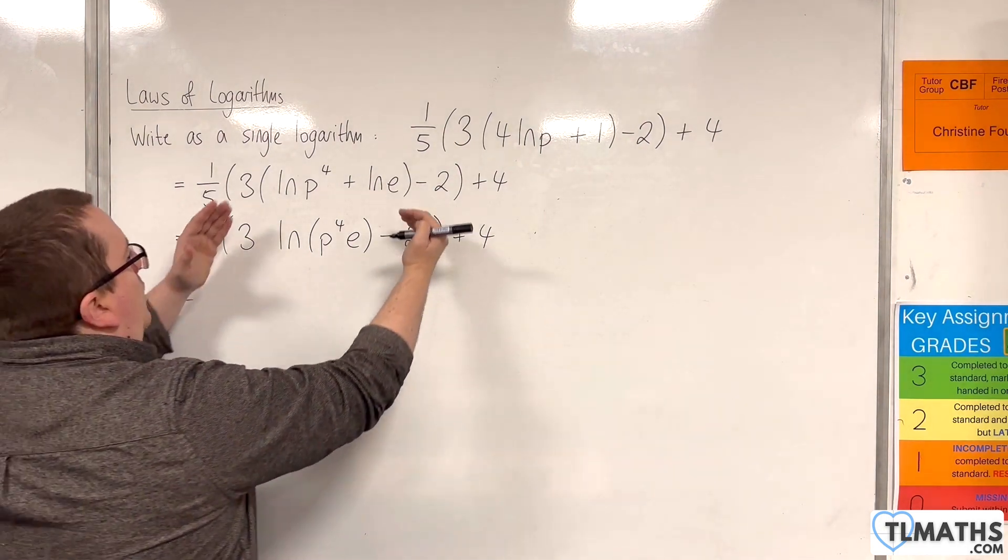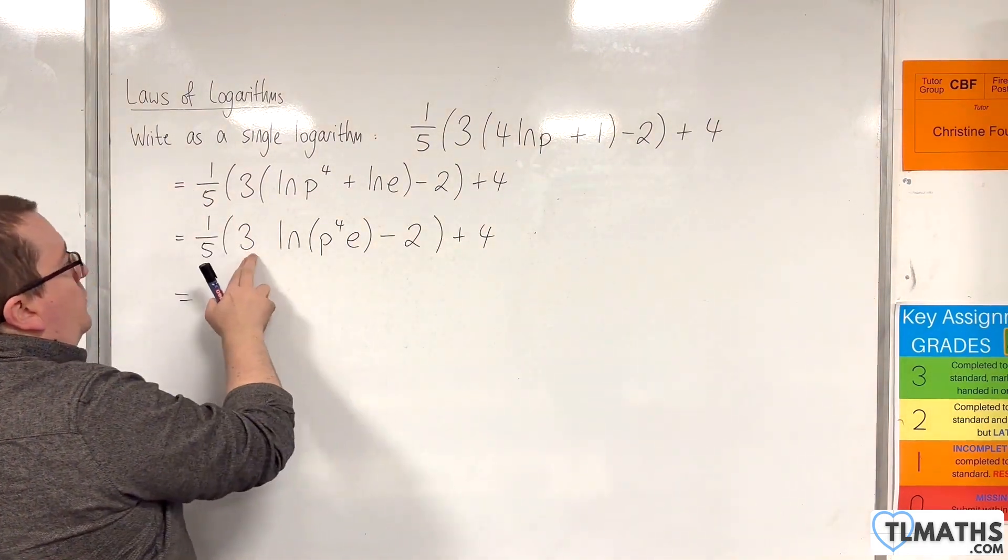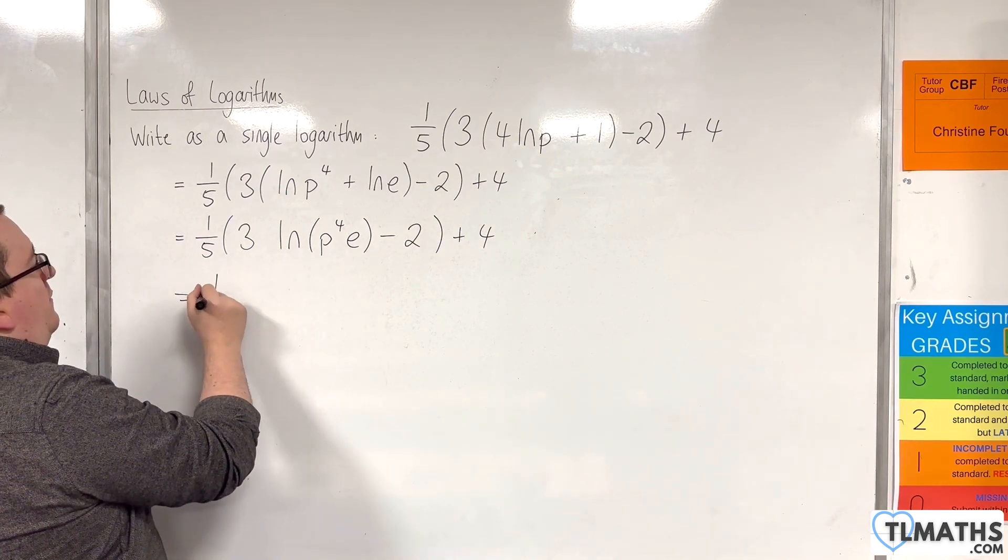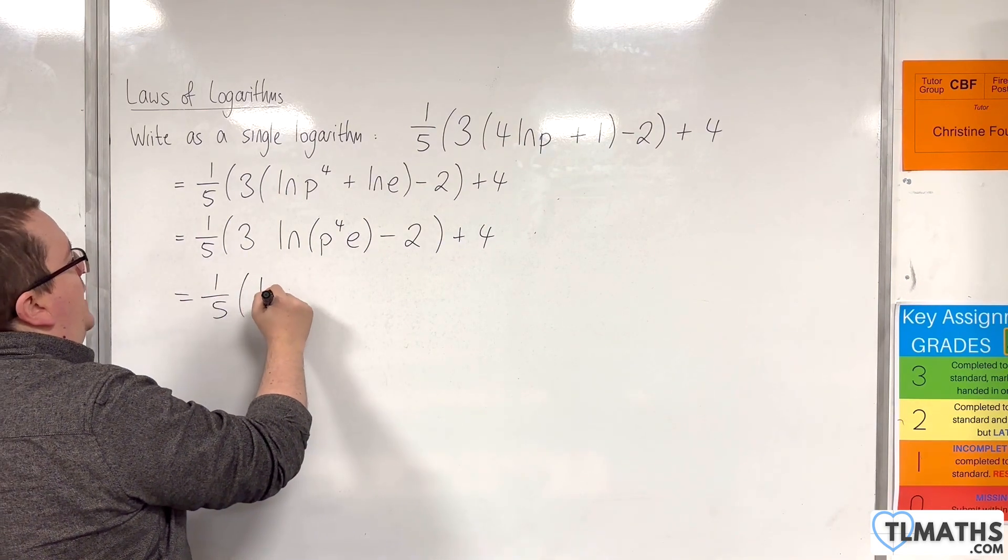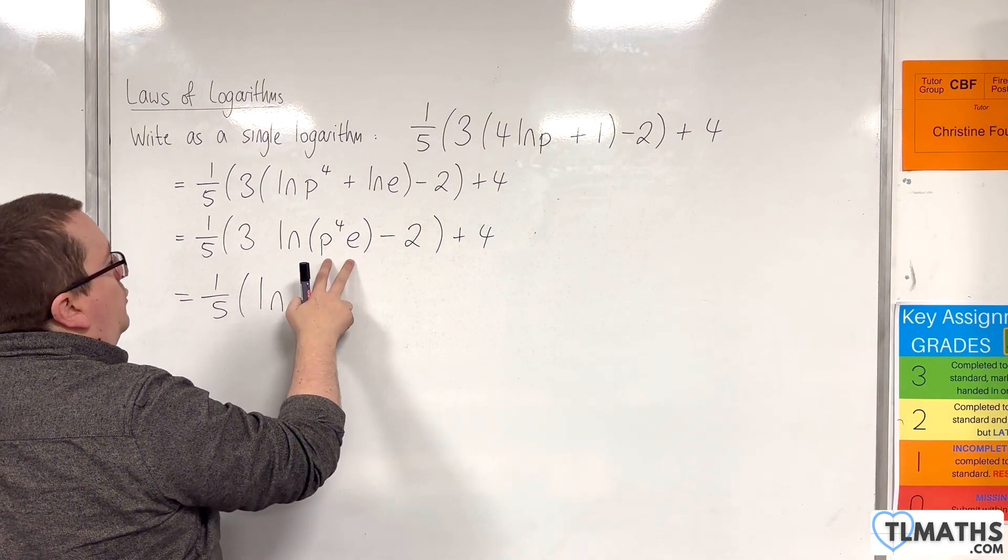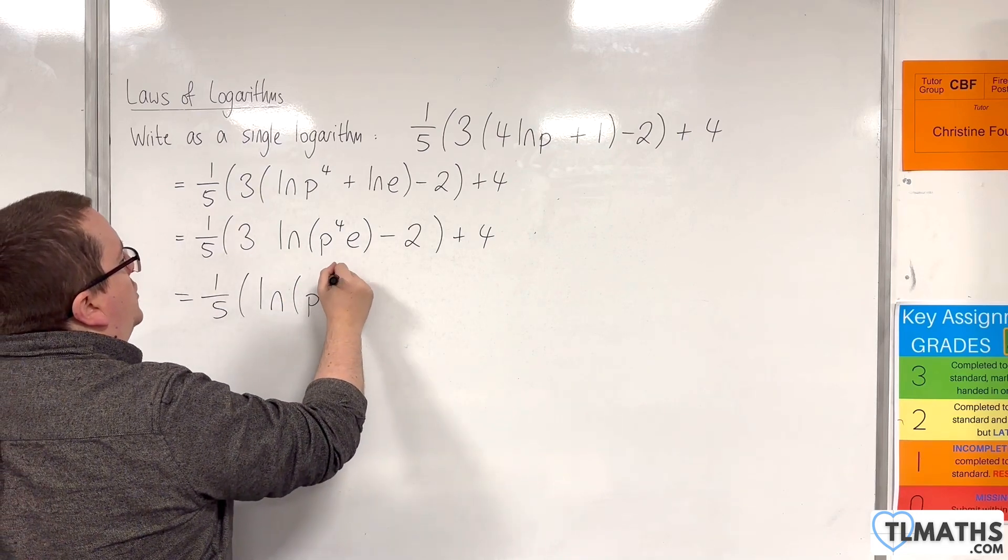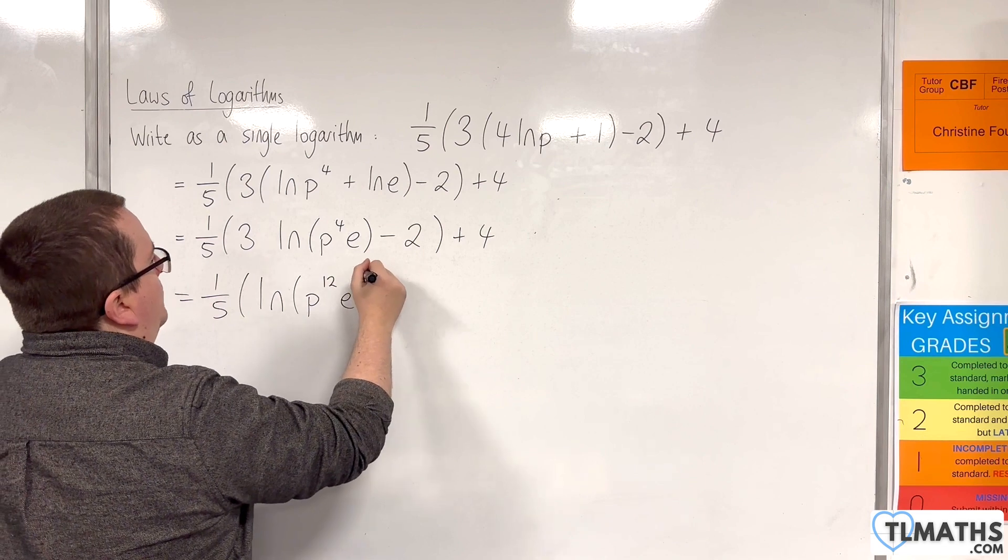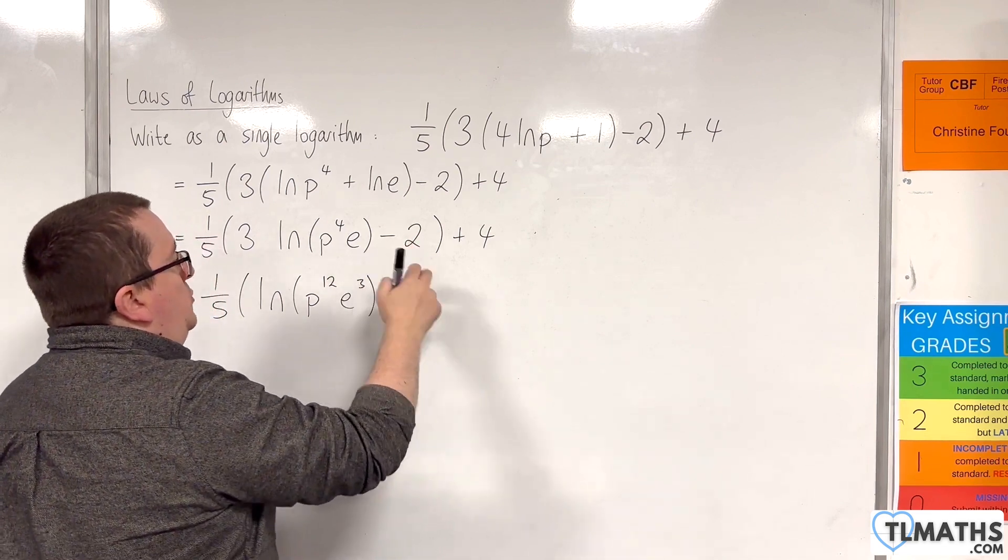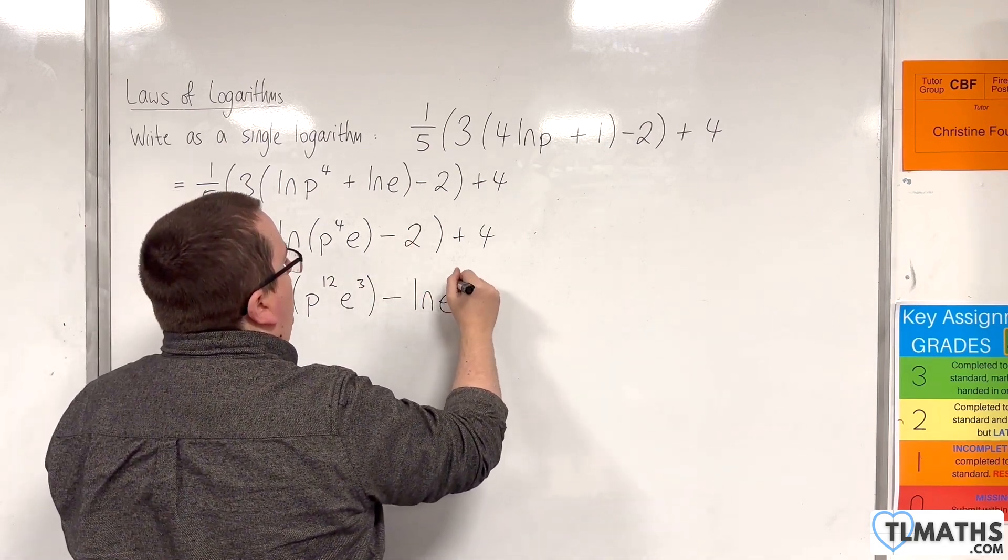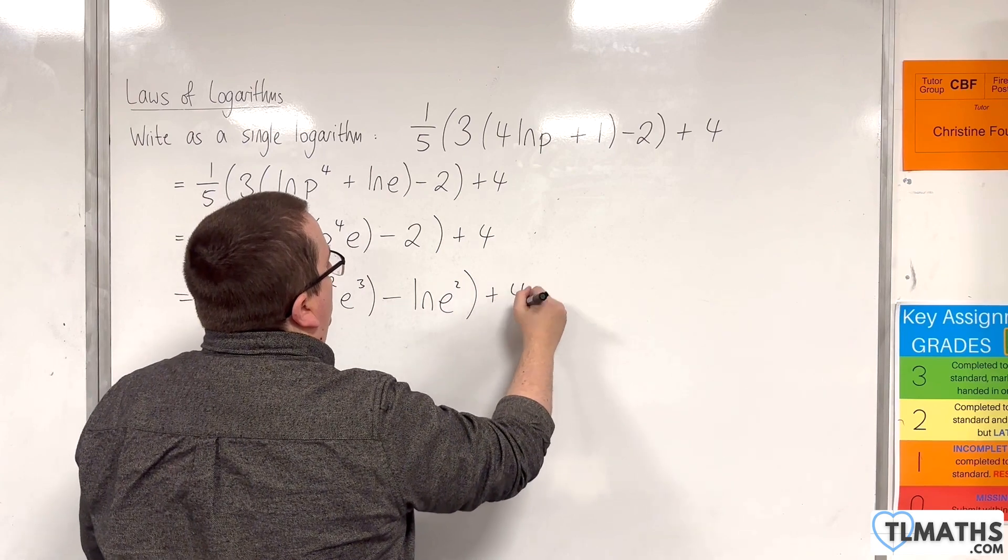So now we'll deal with this bracket. Bring the 3 up to the power. So we have 1/5 times the natural log of p to the 4 e, now all cubed. So that would be p to the 12 e cubed. Then we're taking away 2, which is the natural log of e squared. And then we've got the plus 4 on the end.